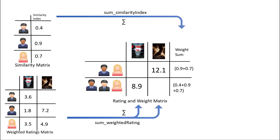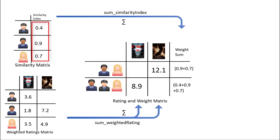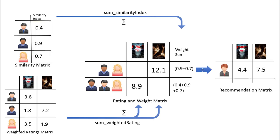However, as three users rated the first potential movie and two users rated the second movie, we have to normalize the weighted rating values. We do this by dividing by the sum of the similarity index for users. The result is the potential rating that our active user will give to these movies based on her similarity to other users. It is obvious that we can use it to rank the movies for providing recommendations to our active user.